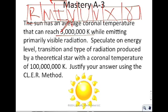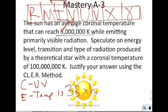Using the CLEAR method: it would produce mostly UV radiation — or X or gamma if you prefer. The evidence is that the temperature is 33 times higher, jumping from 3 million to 100 million Kelvin. The reasoning is that the more energy an atom is given, the higher the transition, and the higher the frequency.